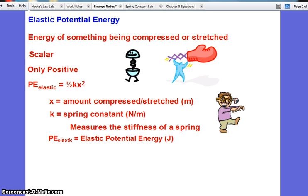The first type of energy we want to talk about is elastic potential energy. This is the energy of anything being compressed or stretched. Examples of elastic potential energy might be the shocks and struts in your car.